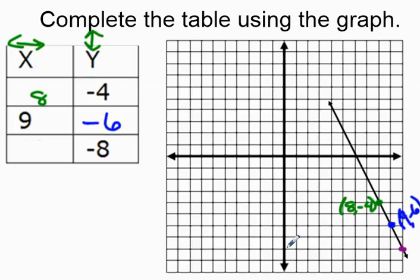If we count over from the axis, that is 1, 2, 3, 4, 5, 6, 7, 8, 9, 10. So that point would be 10, negative 8. Remember, the 10 is positive because we moved to the right. Right is positive, left is negative, just like up is positive, down is negative. So I want to fill in a 10 in my table.